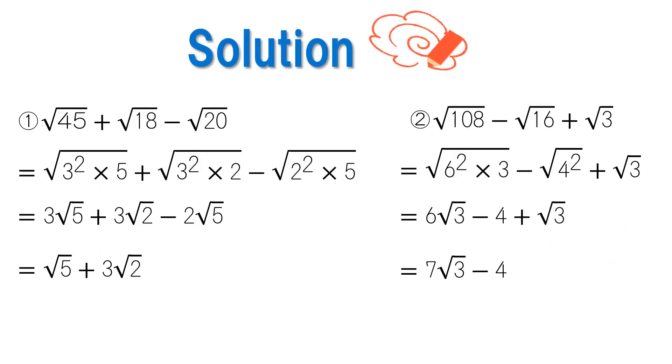Now let's check our answers. The answer to number 1 is square root of 5 plus 3 square root of 2. The answer to number 2 is 7 square root of 3 minus 4. Were you able to answer correctly?